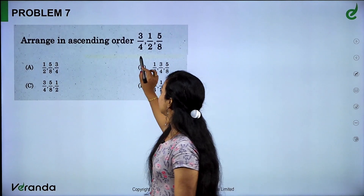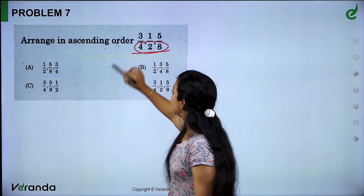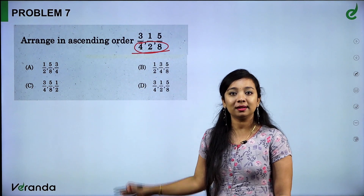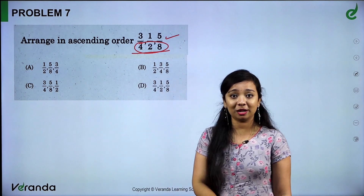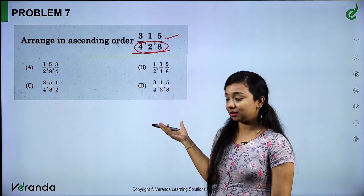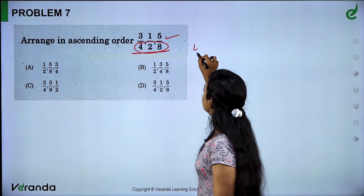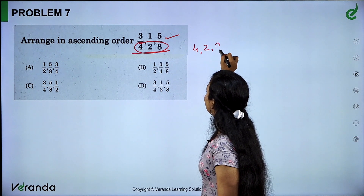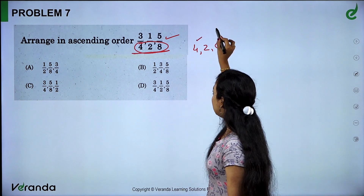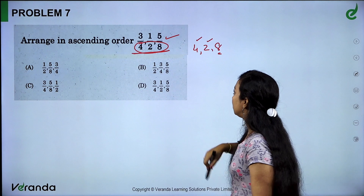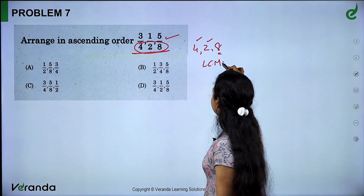Next problem: arrange fractions in ascending order. First, check if the denominators are equal. If denominators are unequal, find the LCM of the denominators. The LCM of 4, 2, and 8 is 8. Convert all fractions to have denominator 8: 4 goes into 8 twice, 2 goes into 8 four times. LCM is 8. The fraction 3/4 is converted accordingly.